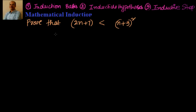Welcome back, hearty welcome to you. We are solving examples as part of mathematical induction, specifically examples where we have inequality between the left hand side and the right hand side in a statement. We have to prove that 2n plus 7 is less than n plus 3 whole square. So I will go ahead and try to solve this.